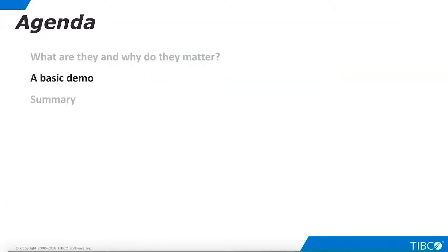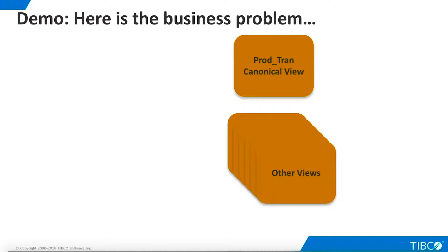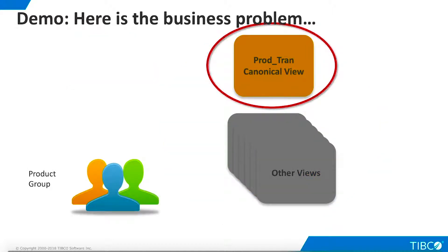Next, let's walk through a very basic demo of TDV privileges. Here is the business problem we illustrate in this demo. Our developers have built and published many views, including a canonical view of product transactions that is the main focus of this demo. System administrators can access all of these published views because of their extensive TDV rights. However, we also have a product group, and members of this group should only be able to see the canonical view of product transactions.